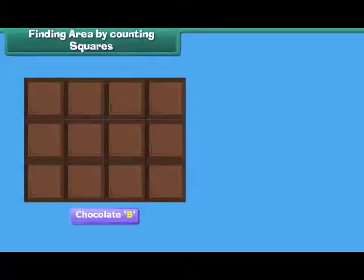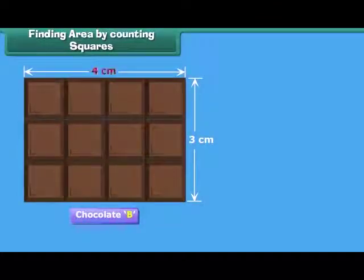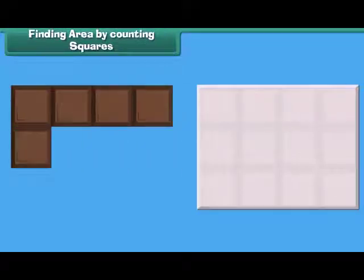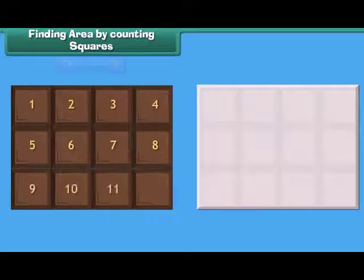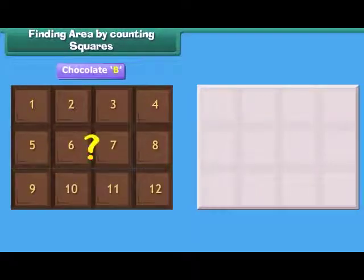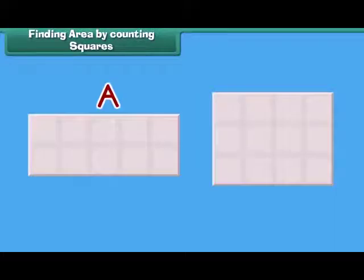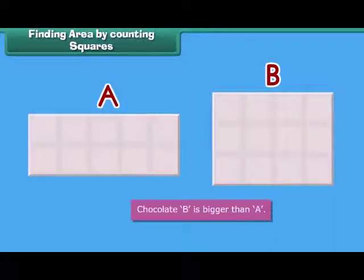Now let us find the area of chocolate B. The length of chocolate B is four centimeters and its width is three centimeters. Four squares can be arranged along its length and three squares along its width. In total, twelve squares can be arranged. Its area is twelve square centimeters. So, chocolate B is bigger in size.